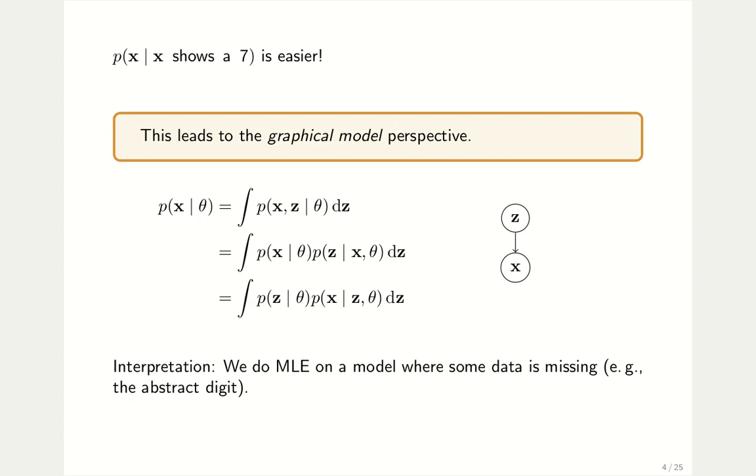On the previous slide, we saw that the distribution of the images given some further information, for example, given the label is much easier. We can just use our standard methodology with Gaussian distributions. Now, this extra information is not given to us, but we can use this as a working hypothesis. So the hypothesis is that this distribution is much easier.